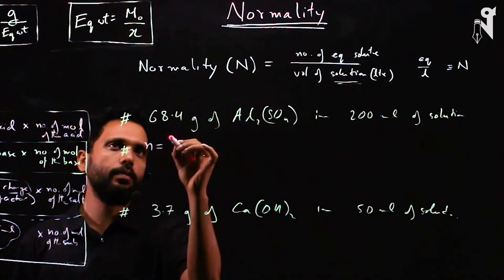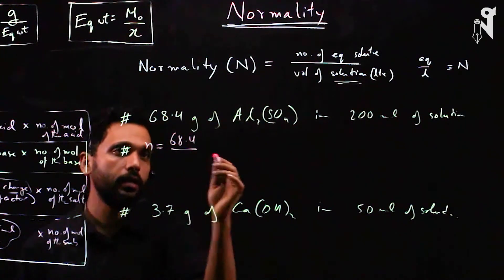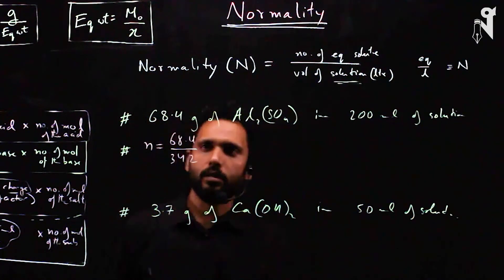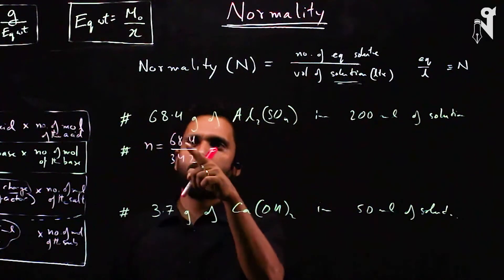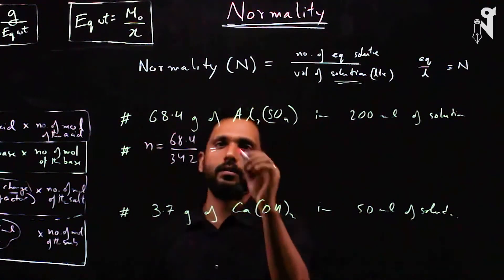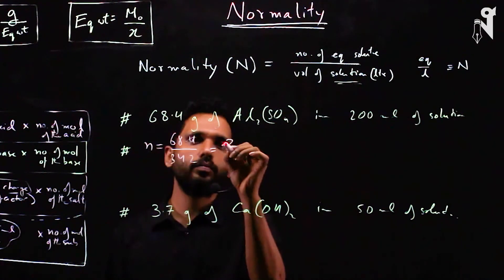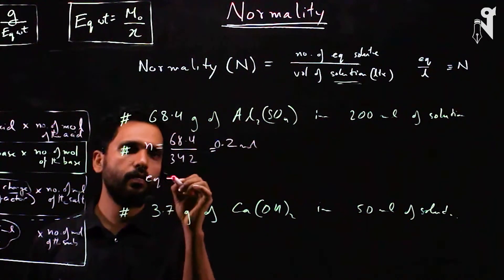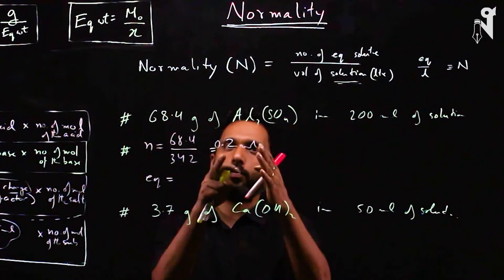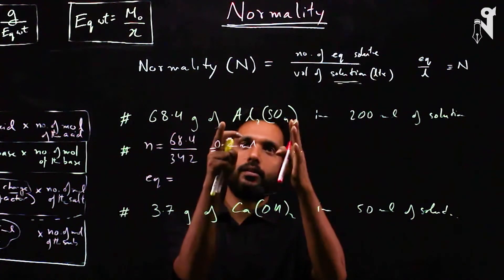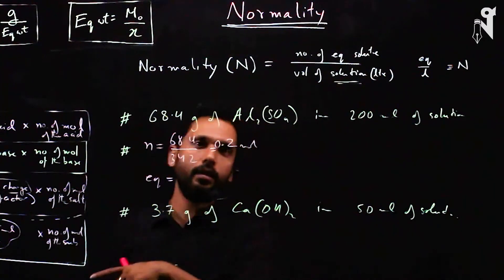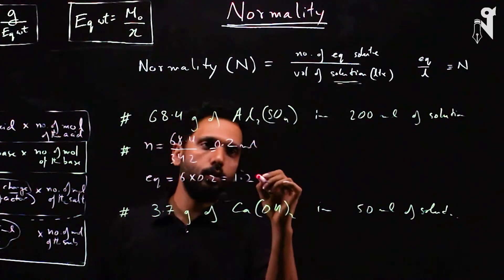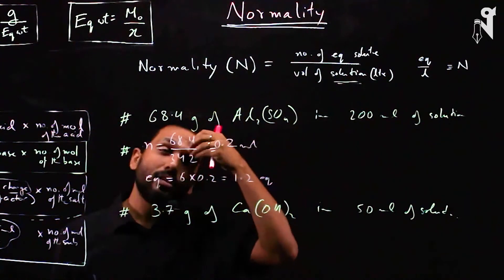Number of moles of aluminium sulfate = 68.4 grams ÷ molar weight of 342 = 0.2 moles. Number of equivalents = X factor × number of moles. Each molecule has a cationic charge of 6, so equivalents = 6 × 0.2 = 1.2 equivalents.